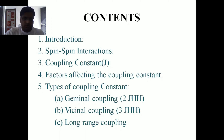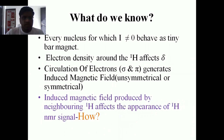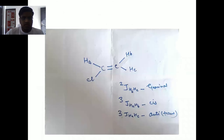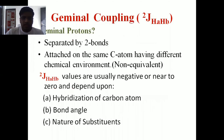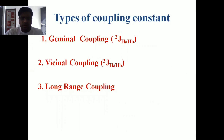Today we are going to discuss about various types of the coupling constant. In the last class we discussed the factors affecting the coupling constant: number one is the number of bonds through which the interaction is taking place, second is the type of bond, and third is the geometrical orientation of the bonds or angle. Today we start from the types of coupling constant: number one is geminal coupling constant, second is vicinal coupling constant, and third is long range coupling.